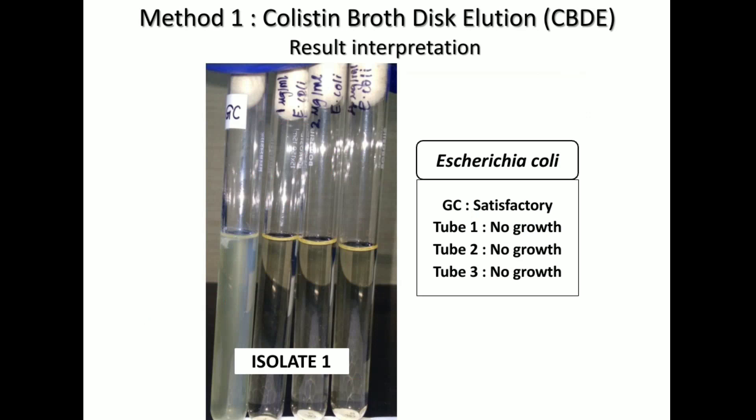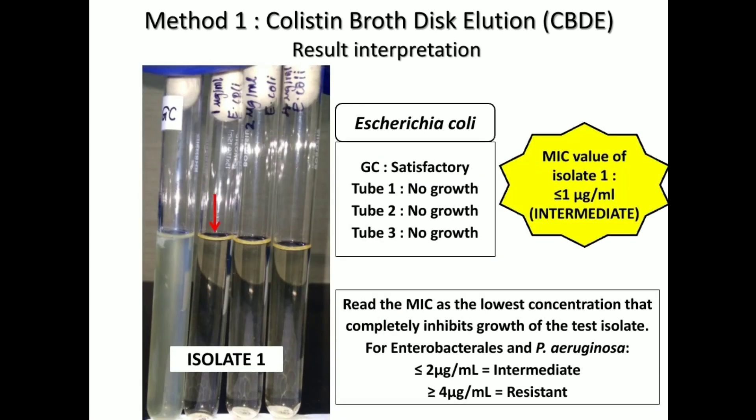This is isolate 1. The growth control is satisfactory and there is no growth in all the other tubes, which means that the tube containing 1 microgram per ml of colistin has inhibited the isolate.